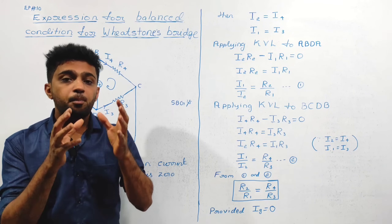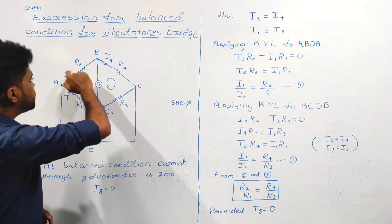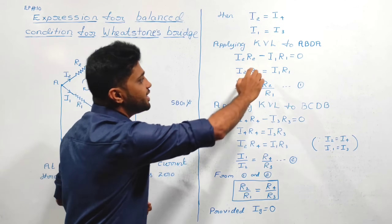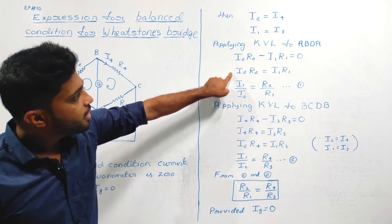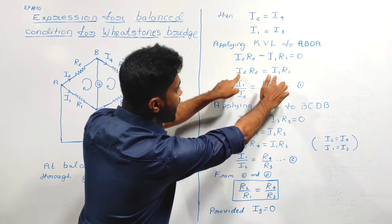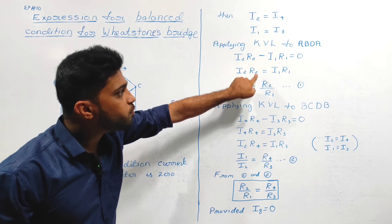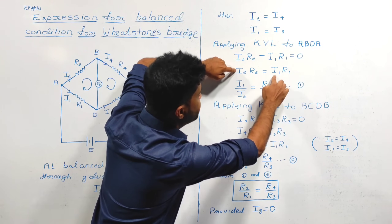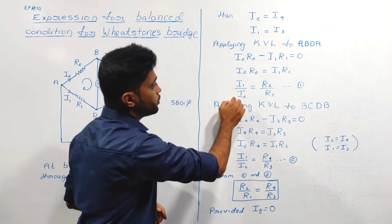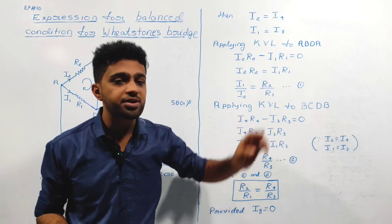According to Kirchhoff's voltage law, the algebraic sum of potentials in a closed loop is always zero. So I2 R2 minus I1 R1 equals zero, which gives I2 R2 equals I1 R1. Therefore, I1 divided by I2 equals R2 divided by R1. This is equation number 1, derived from the ABDA loop.